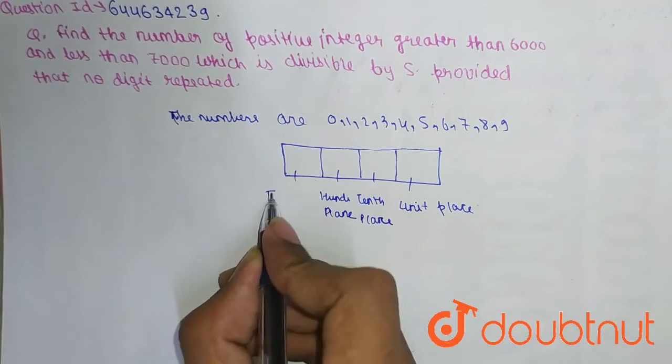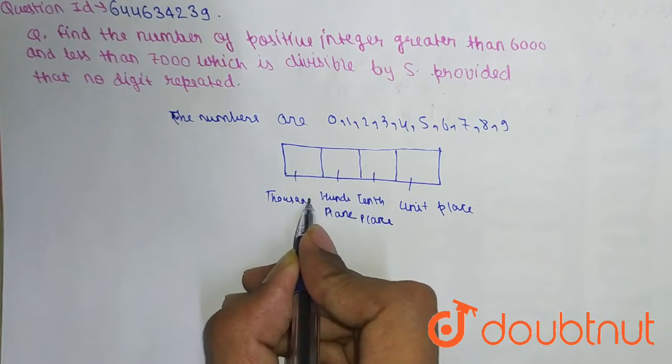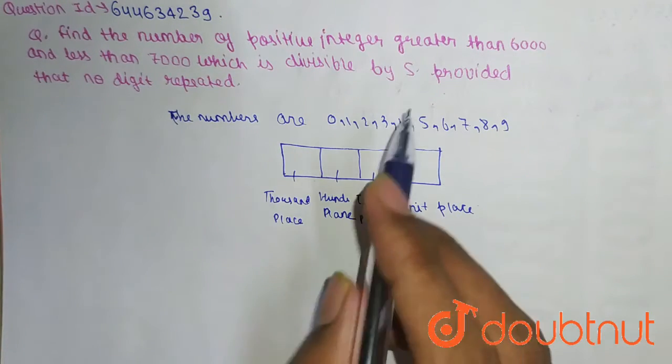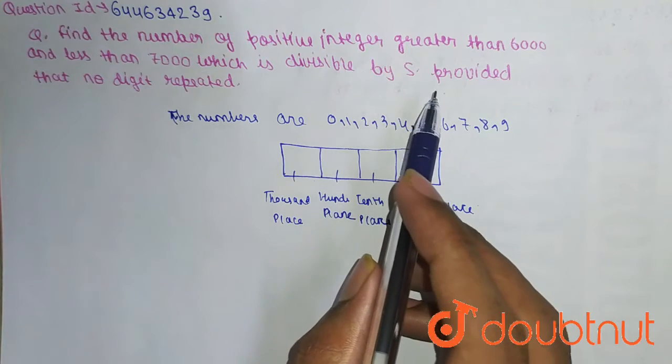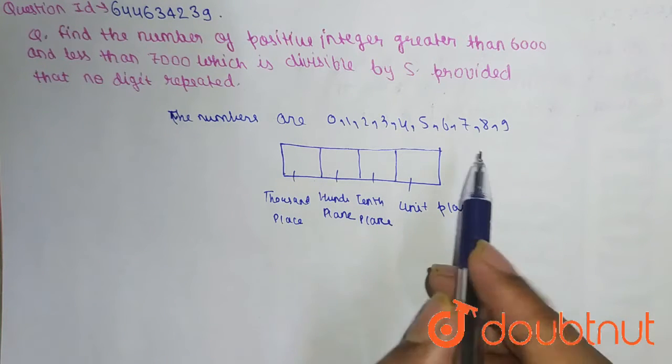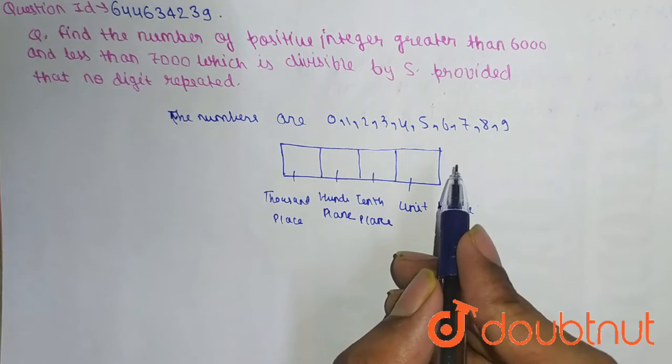So as in the question given, the number is divisible by 5. So the condition for a number which is divisible by 5 is that at unit place there will be either 0 or 5.